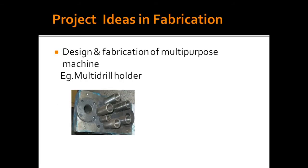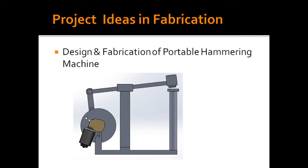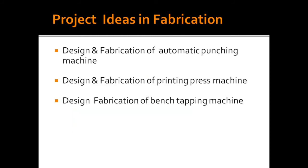Next we will see some project ideas based on these four categories. First one is design and fabrication of multipurpose machine — for example, a multi-drill folder. This we have to design in software and create manually. Then fabrication of a portable hammering machine. Next is design and fabrication of automatic munching machine, printing press machine, and bench tapping machine. You can study these and take ideas to create different models or designs.